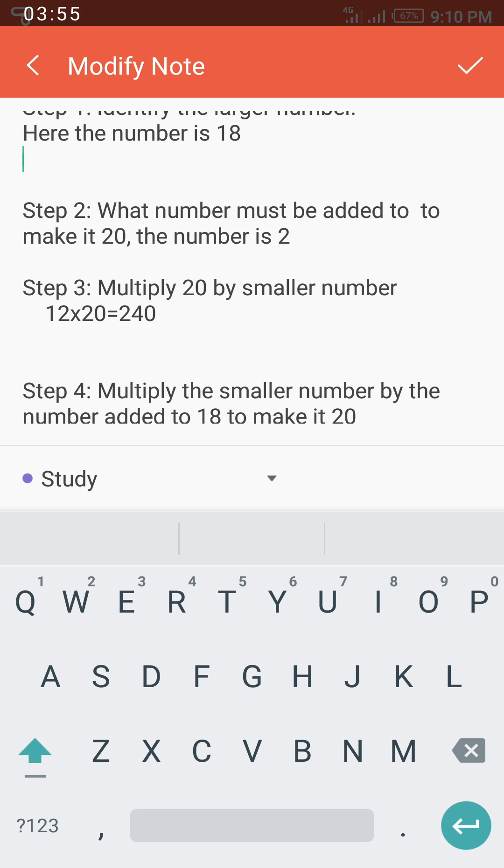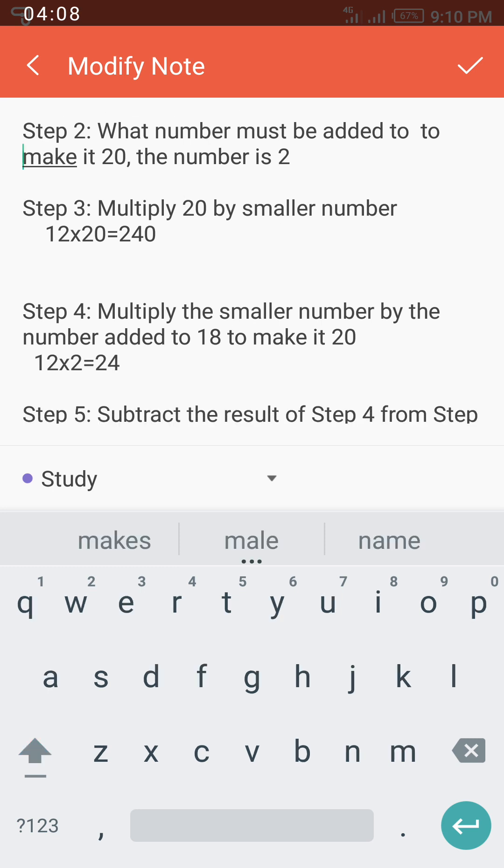We have made use of 18 because we've added 2 to it to give a new number. All we need to do is look for the smaller number and multiply by the new number, which is 20. So here the smaller number is 12. 12 times 20, and that gives 240.